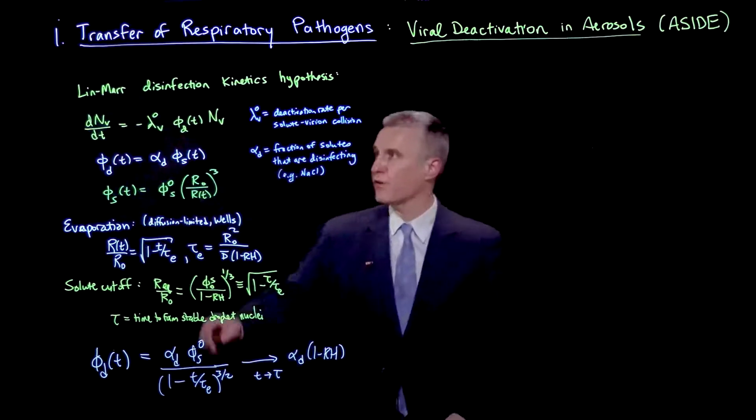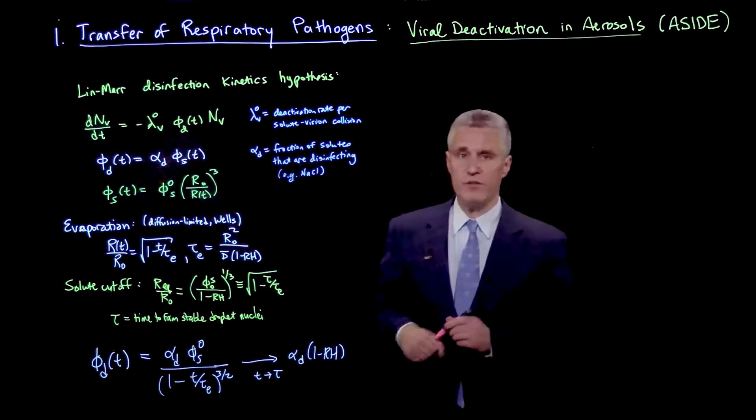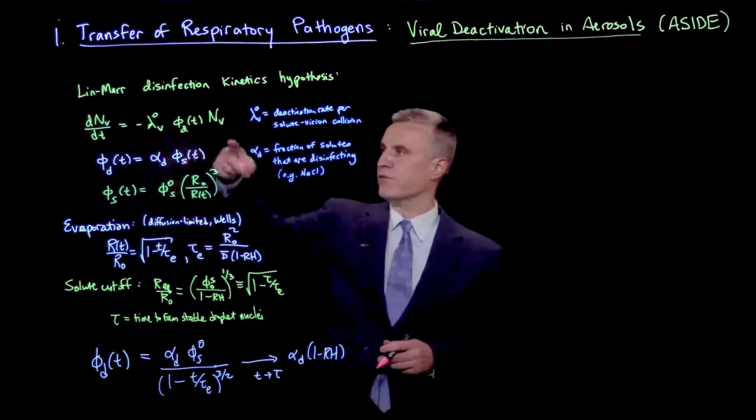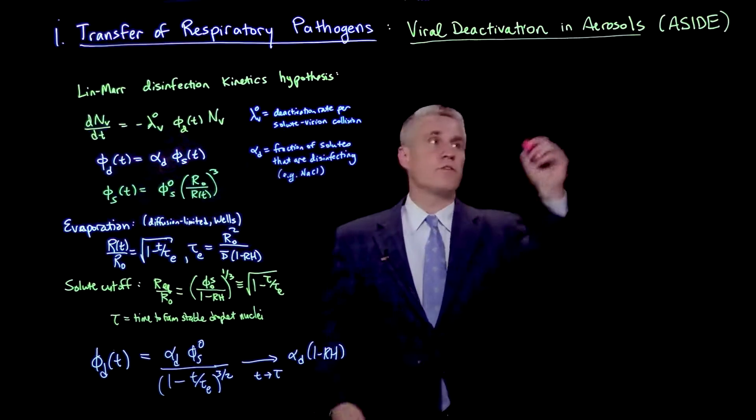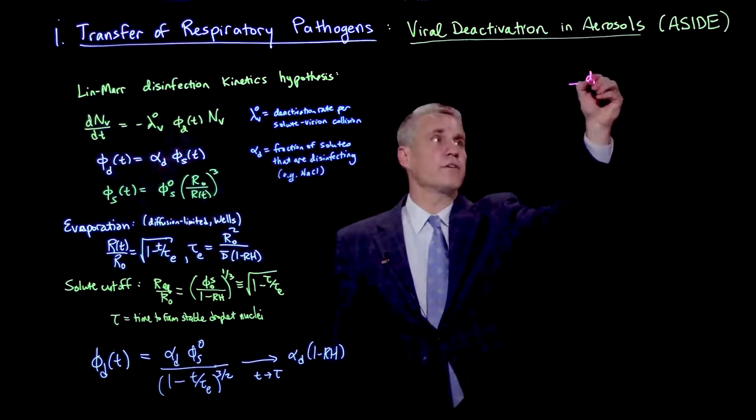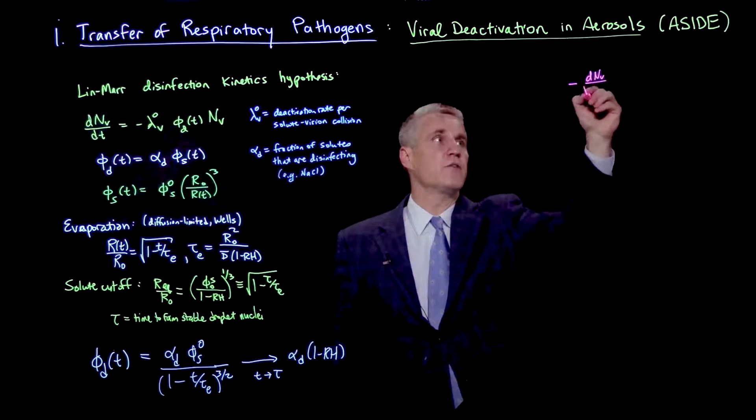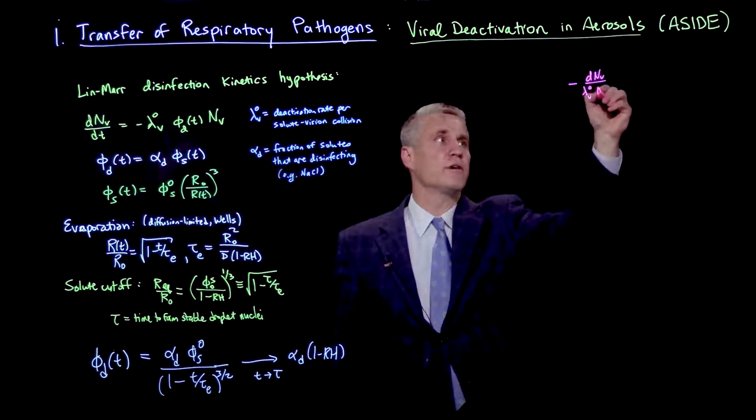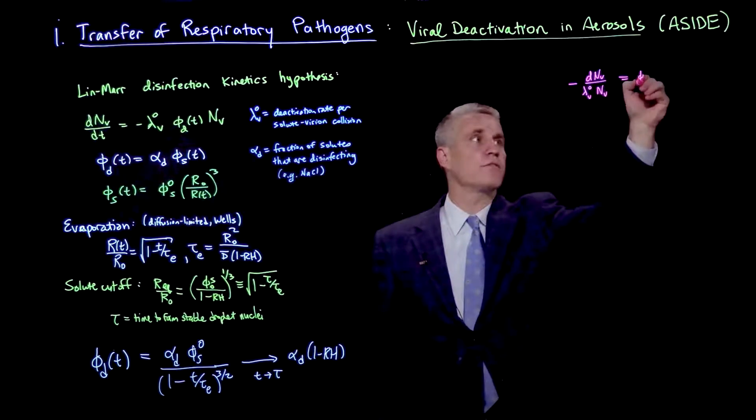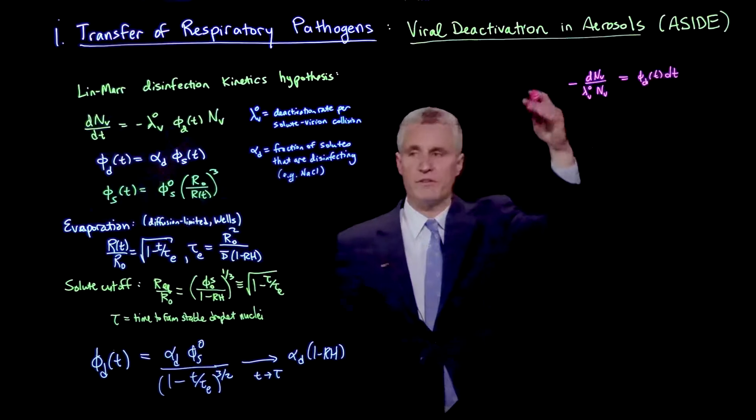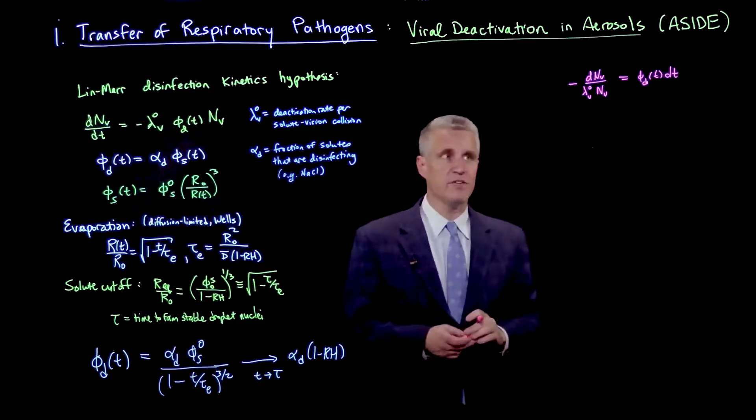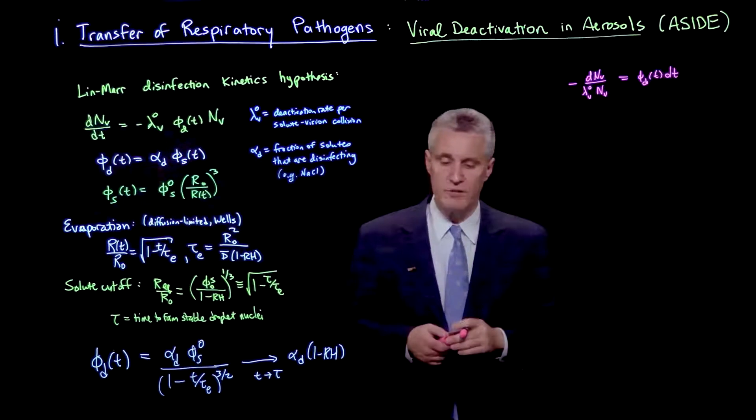Let's go back to this dynamical equation and solve it. This is a first order separable ordinary differential equation. We can write this as minus dNv over lambda v0 and nv equals phi d of t dt. We put all the n's on one side and the t's on the other side, and we can integrate this equation.